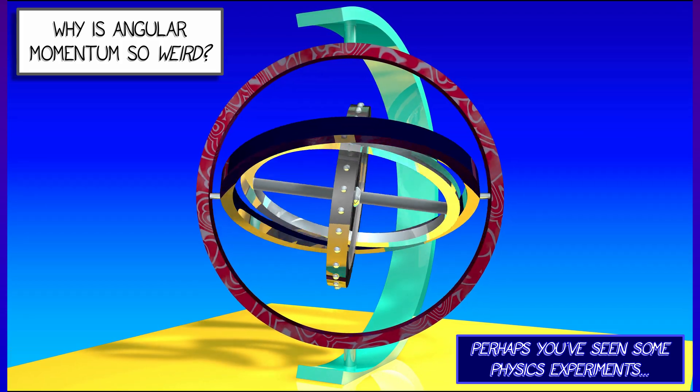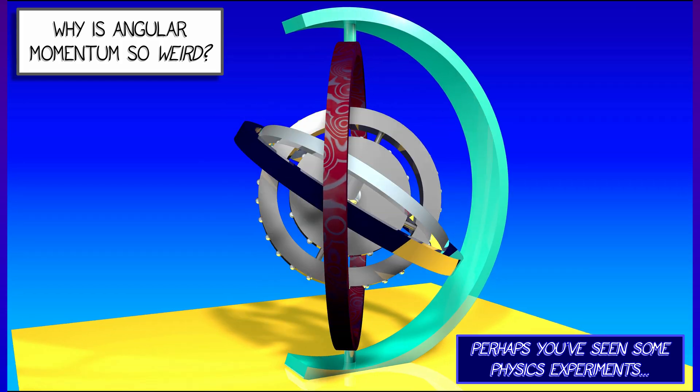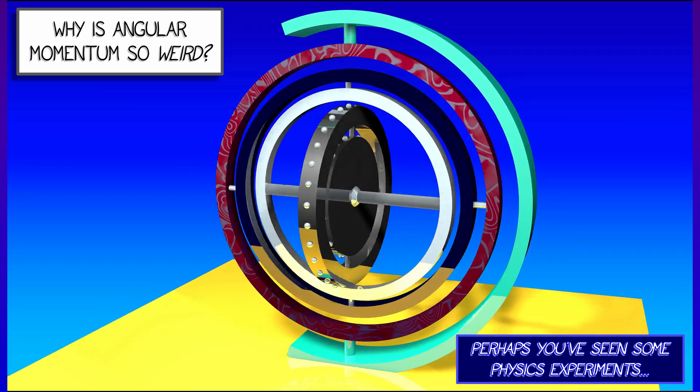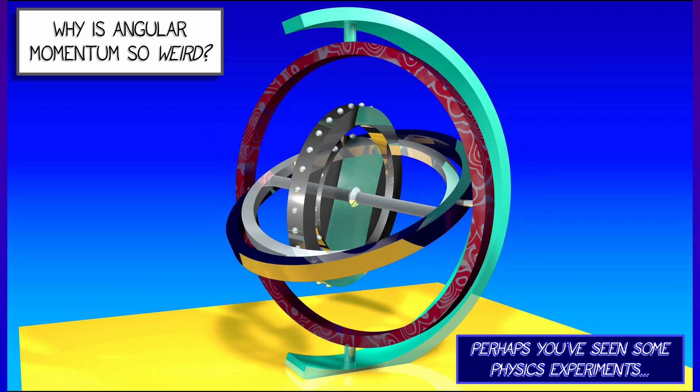If you have a matrix that is not a constant times the identity matrix, there's no reason to expect that hitting a vector with that matrix is going to result in a parallel vector.